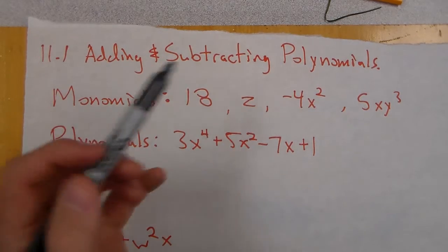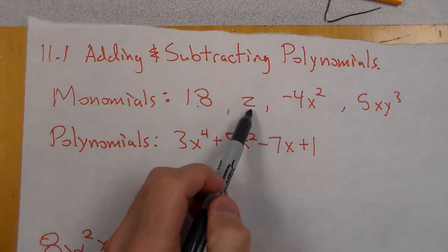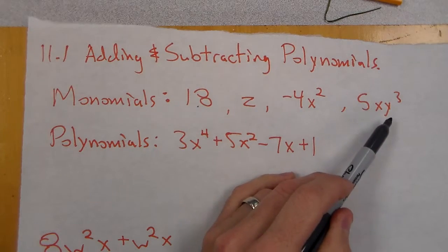First off, we start with monomials and a monomial is just a single term. Could be a number, could be a variable, could be a number with a variable, could be a number with multiple variables.